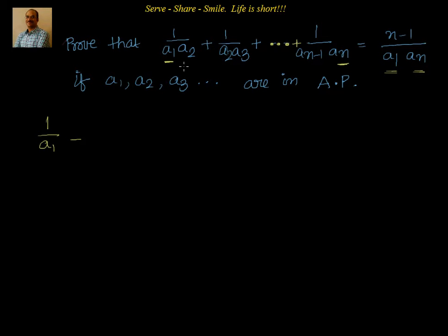This is nowhere related to whatever is given there. We are just checking what is that. 1 by a1 minus 1 by a2 is nothing but a2 minus a1 divided by a1a2. We know that a2 minus a1 or a3 minus a2 is always equal to common difference d. So, can I say this is equal to d by a1a2.